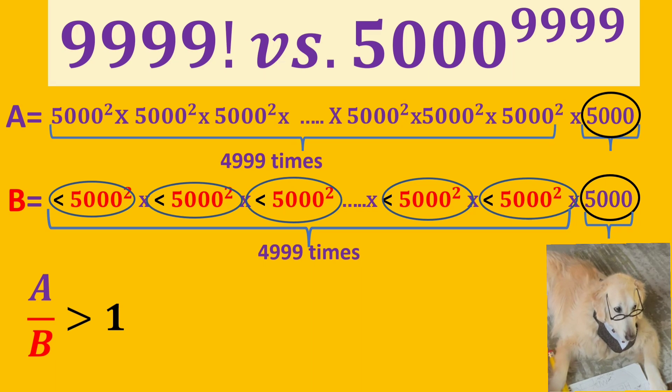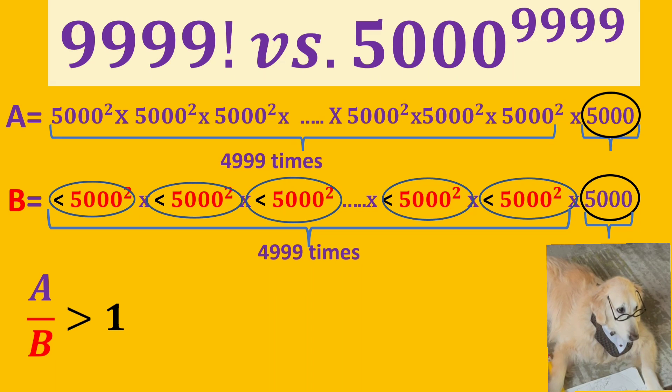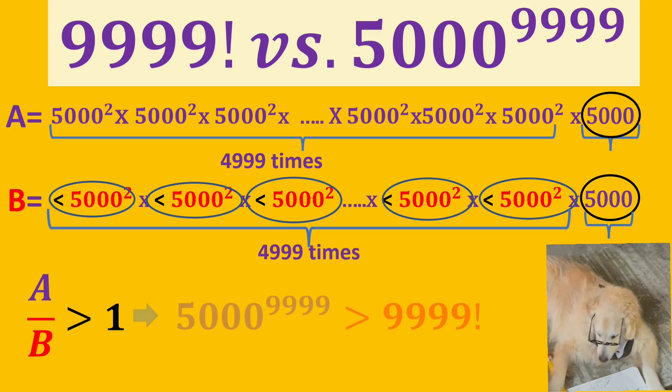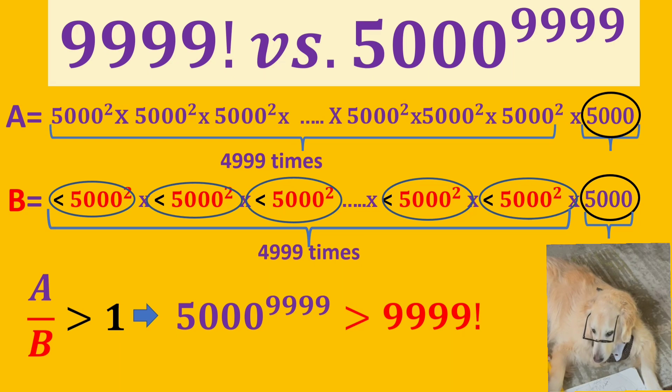If A is divided by B, the result will be bigger than 1. So, we can say that 5000 to the power of 9999 is larger than 9999 factorial.